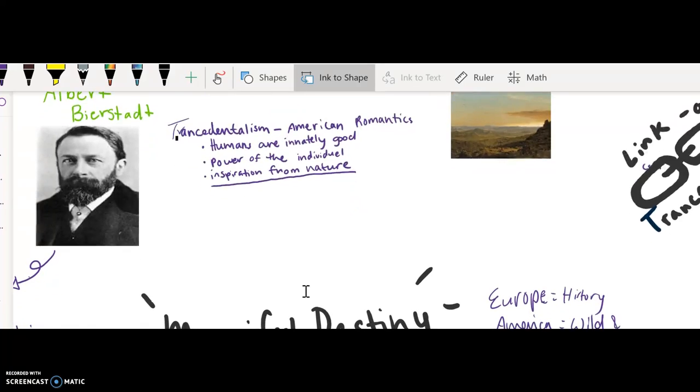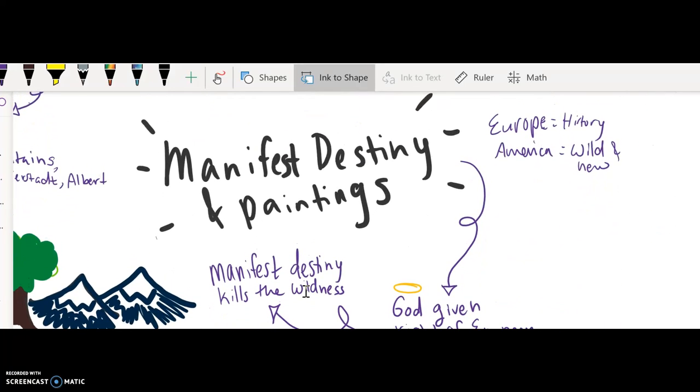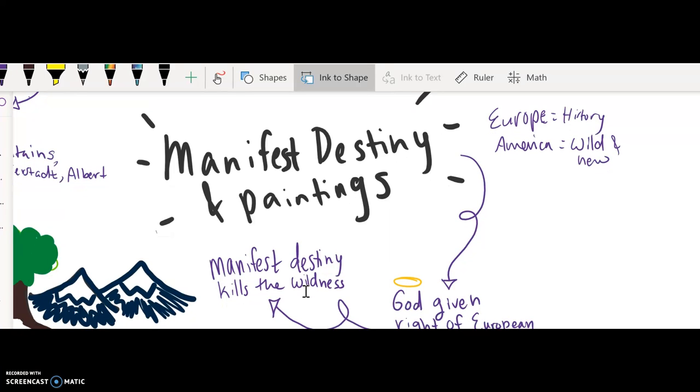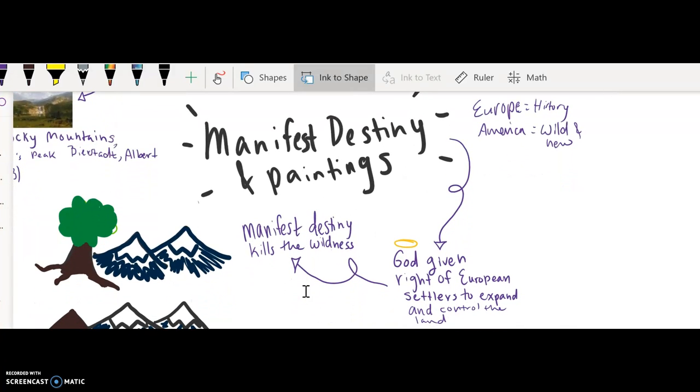However, there is an irony revealed in this in Manifest Destiny and these paintings that are of landscapes in that these paintings, in going out and seeking this land that was to be painted, what ended up happening is this area that was seen as God-given to European settlers.